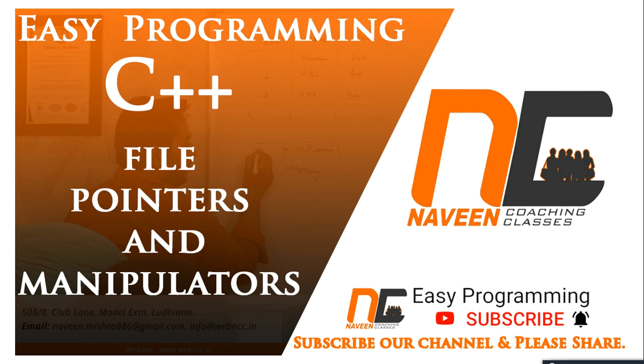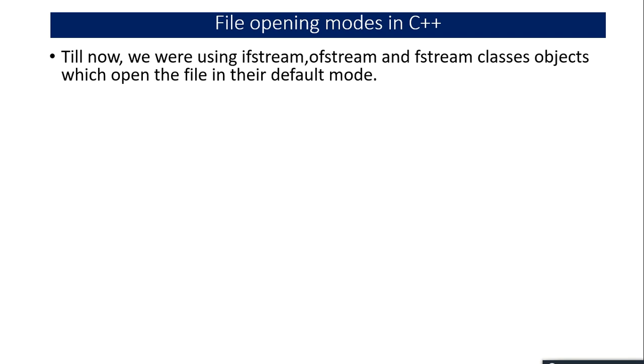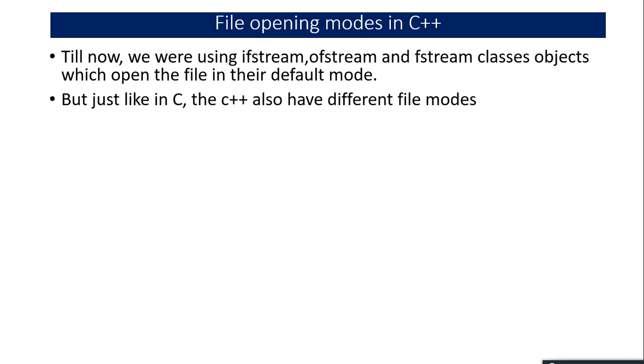Let's start with file pointers and manipulators. In the previous video I discussed ifstream, ofstream, and fstream — how to read data from a file and how to write data into a file. For reading we use ifstream, for writing we use ofstream, and fstream can be used for both. When a file is opened, the purpose and operations must be told in advance to the compiler; this is done using file opening modes.